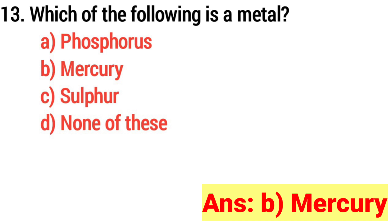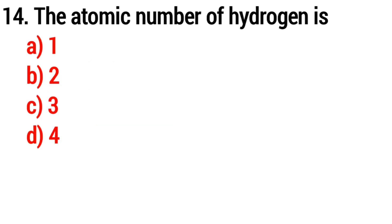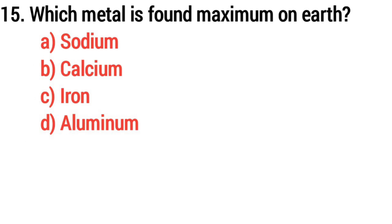Answer: option B, mercury. Question 14: the atomic number of hydrogen is? Answer: option A, one. Question 15: which metal is found maximum on earth?